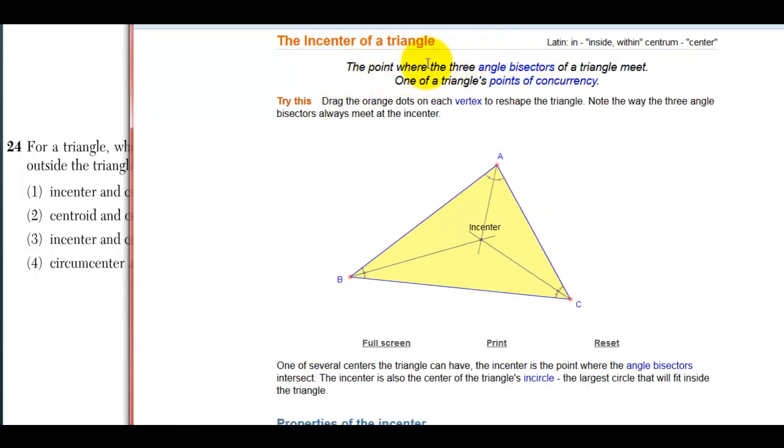The incenter of a triangle is the point where the angle bisectors meet. We could sit here all fucking day making obtuse triangles, right triangles, acute triangles, but the incenter will always be inside.